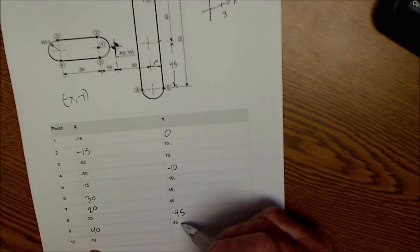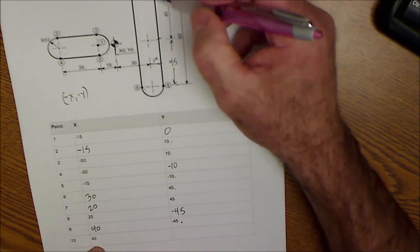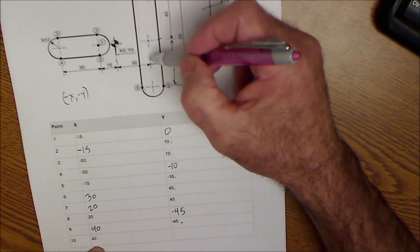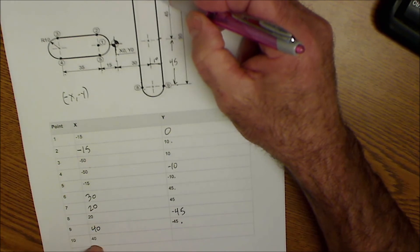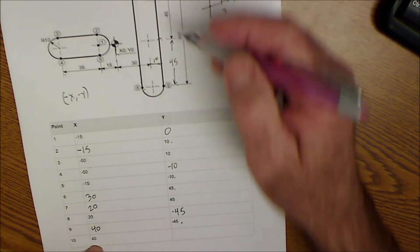Lastly, point number 10. Point number 10 is right here - it is over this 30 plus this 10, so it's over 40. That's where that is, and it is up 45.